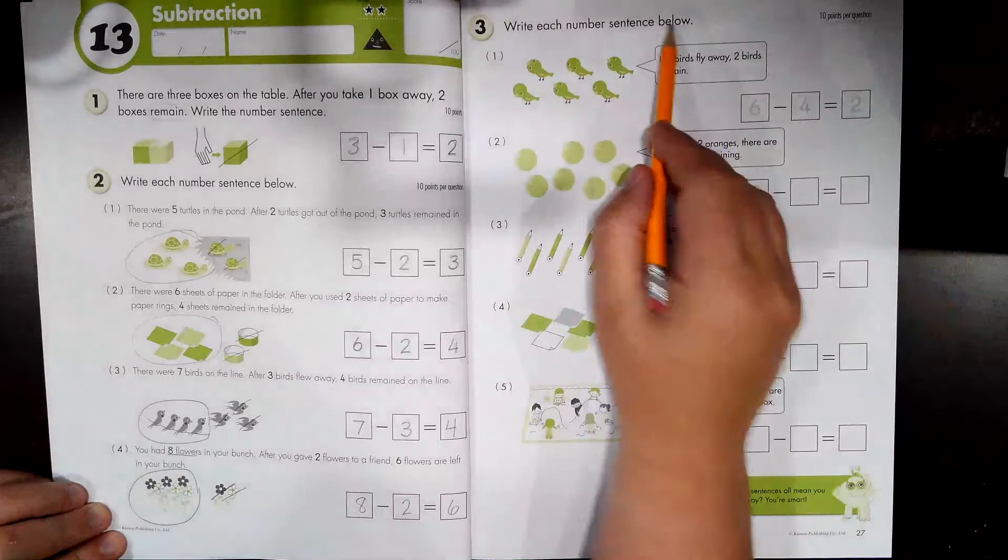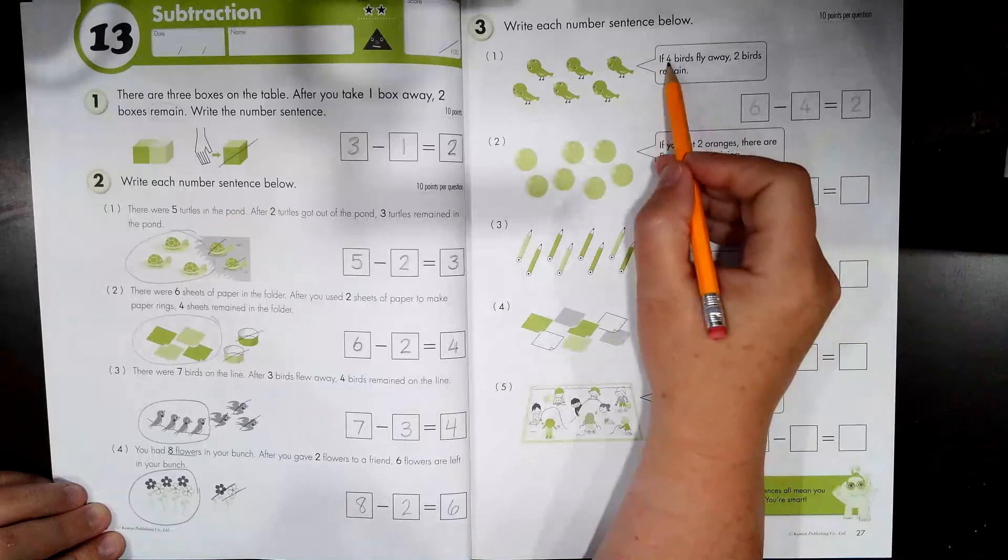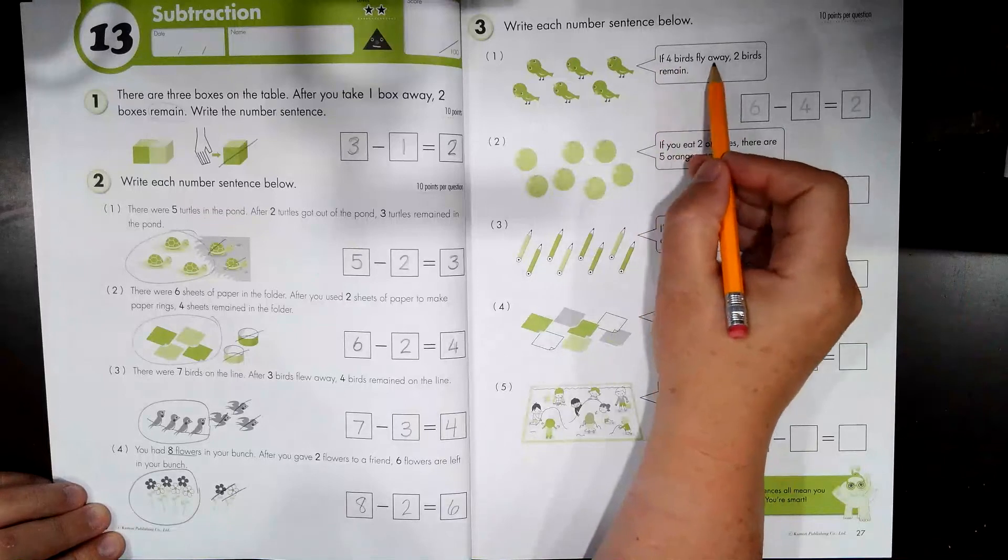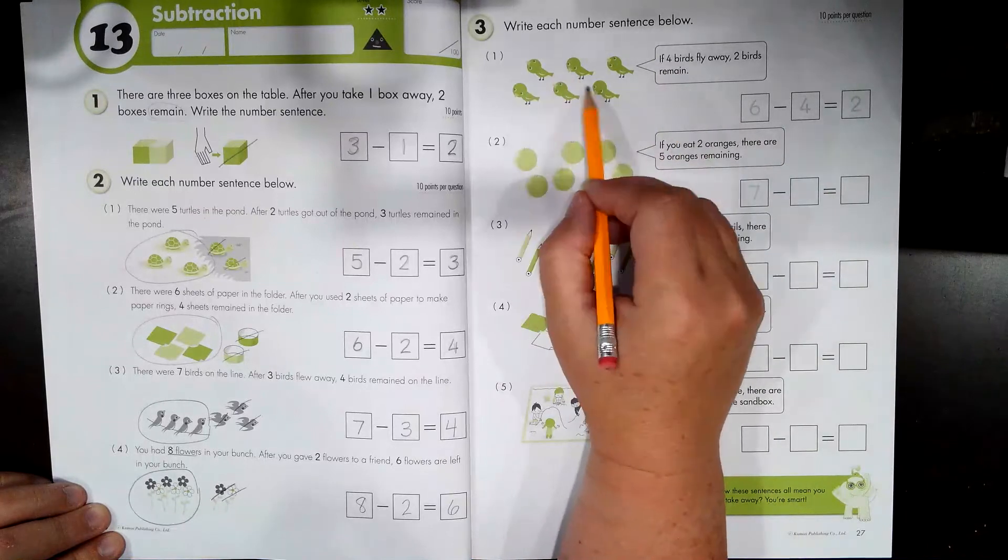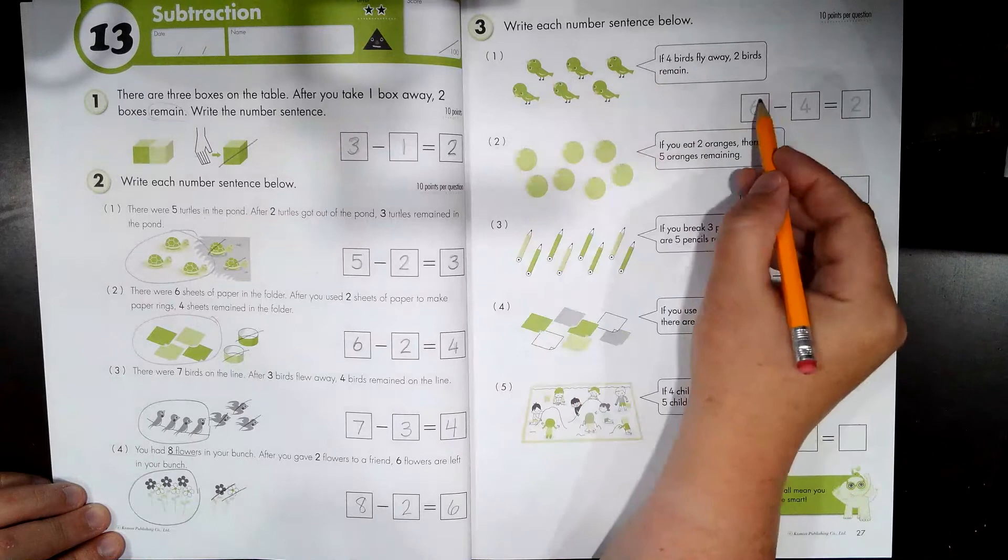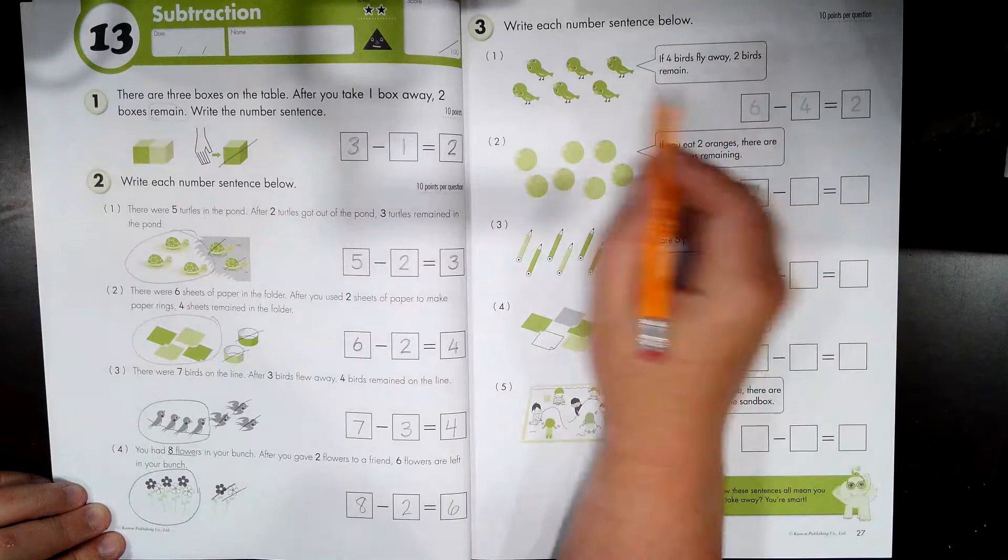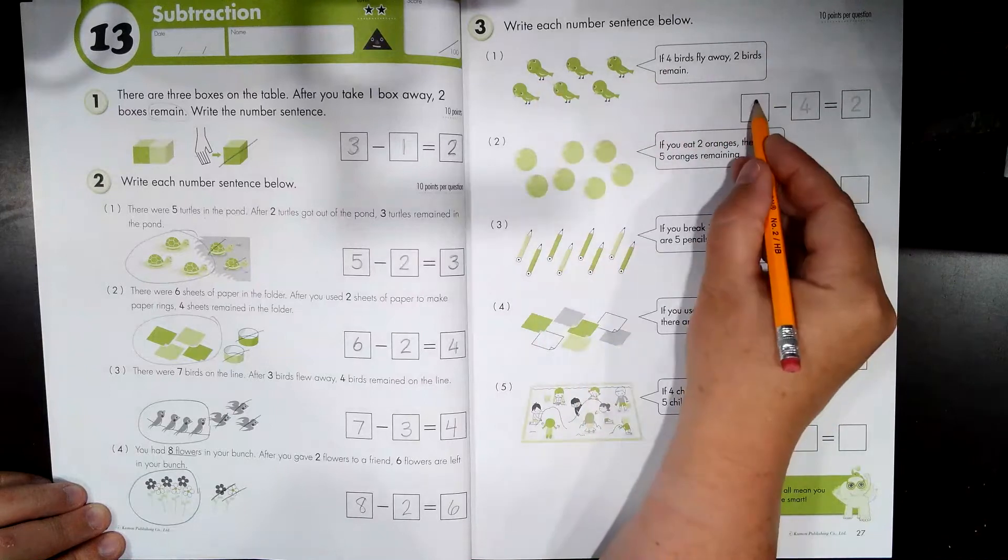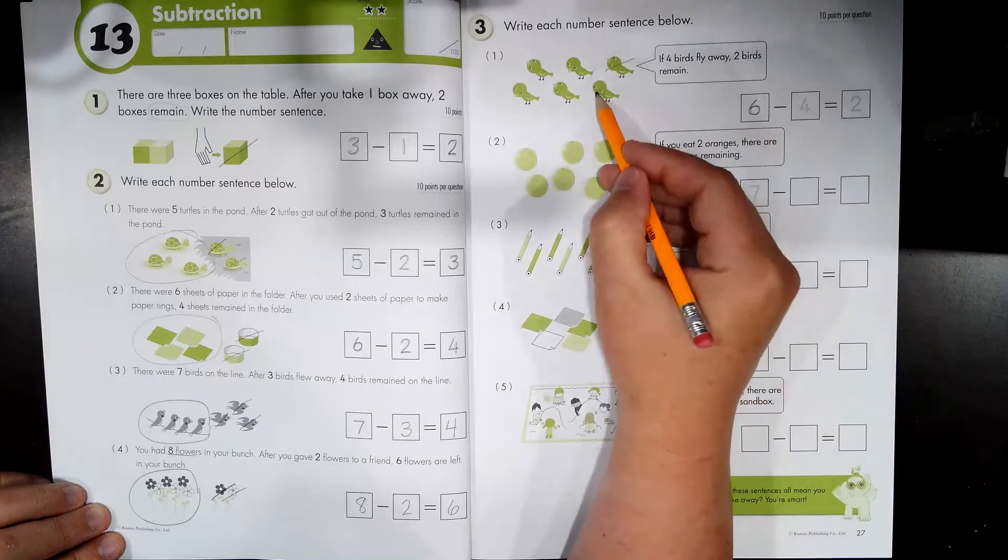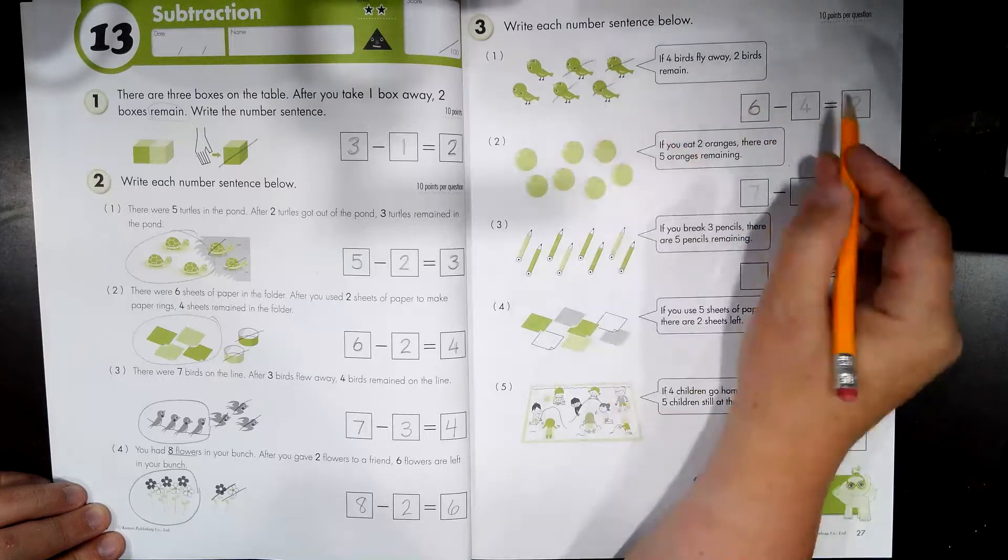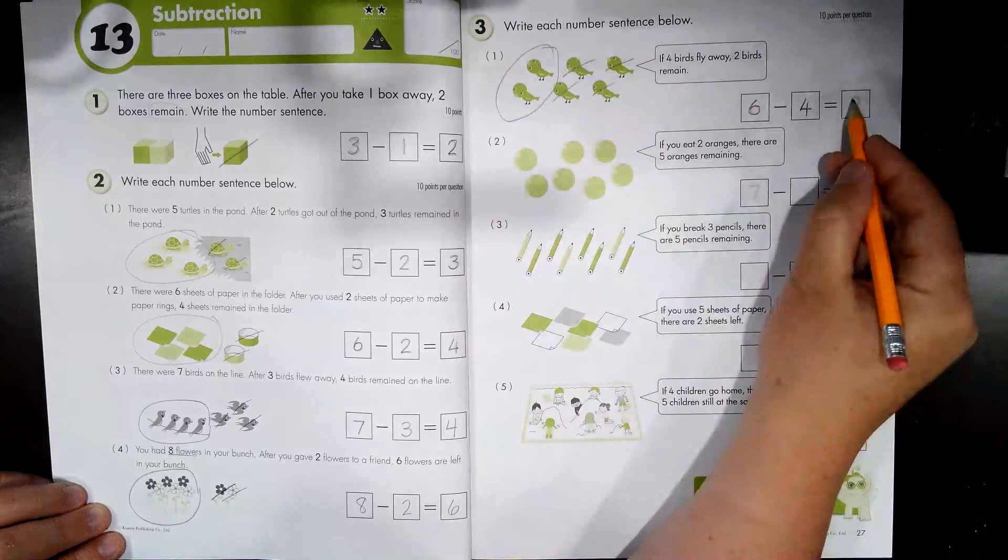Write each number sentence below. I'm gonna read this for you and you're gonna do the rest by yourself. If four birds fly away, two birds remain. You have to do the job of counting how many there are all together. That's where the number six came from. They didn't give it to you. They show you in the picture. So there are six total birds. One, two, three, four birds fly away. Two birds remain.